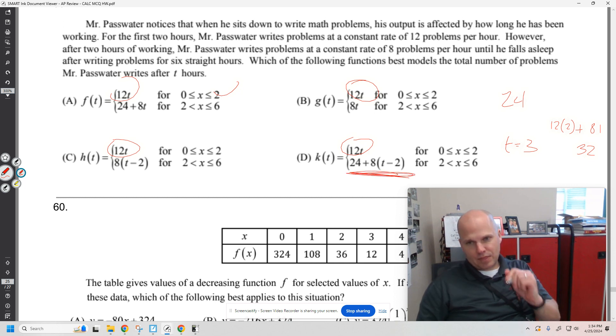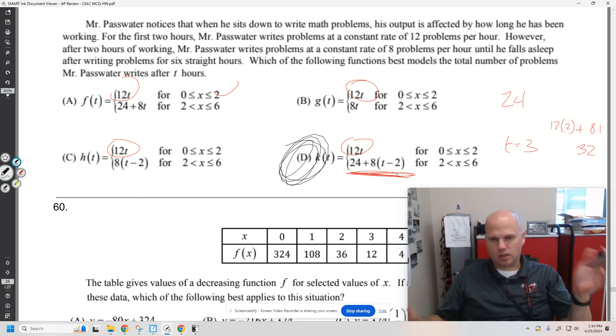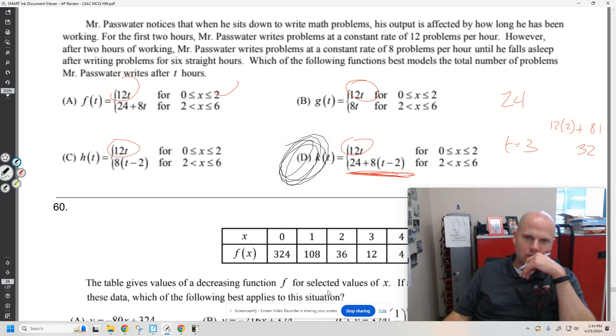If you plug in three into this equation, you get 32. You plug in three into this equation, you don't. If you plug in three into this equation, you don't. If you plug in three into that equation, you don't. So it's just kind of understanding versus like, oh, how did you get that? It's like, I just kind of figured it out. The key is like, I have the 24 problems that I've already made, and then this T minus two means if I plug in three, I've worked one hour in this next rate.